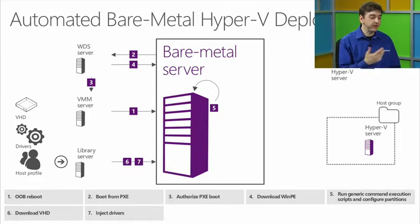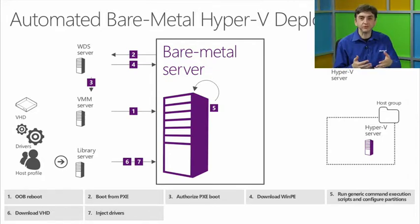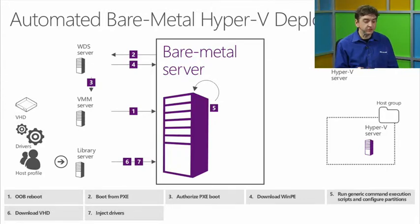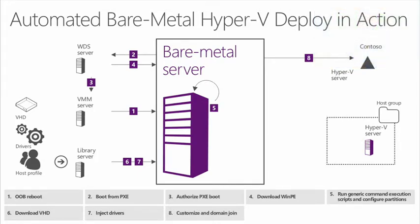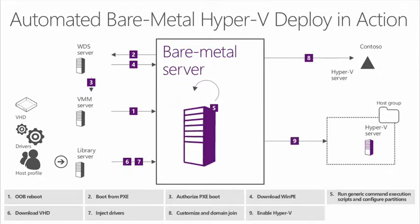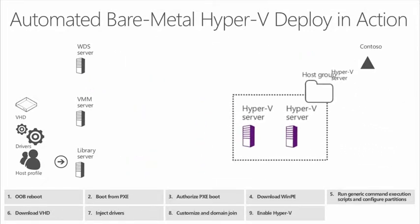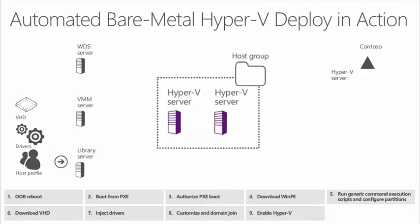It'll copy the VHD down and copy down all the drivers necessary — if it's an HP or Dell system needing a custom SCSI array driver or a Fibre Channel adapter driver, we can copy all those drivers down. After finishing, we'll customize the machine, give it the machine name, and do a domain join — in this case the Contoso domain. After that, every domain join requires a reboot. We'll enable Hyper-V and do a reboot. After rebooting, it will be part of the domain, have Hyper-V role enabled, and be part of our host group. We can then create a cluster or run any post-install scripts, and then manage this thing as a fully managed host within VMM.